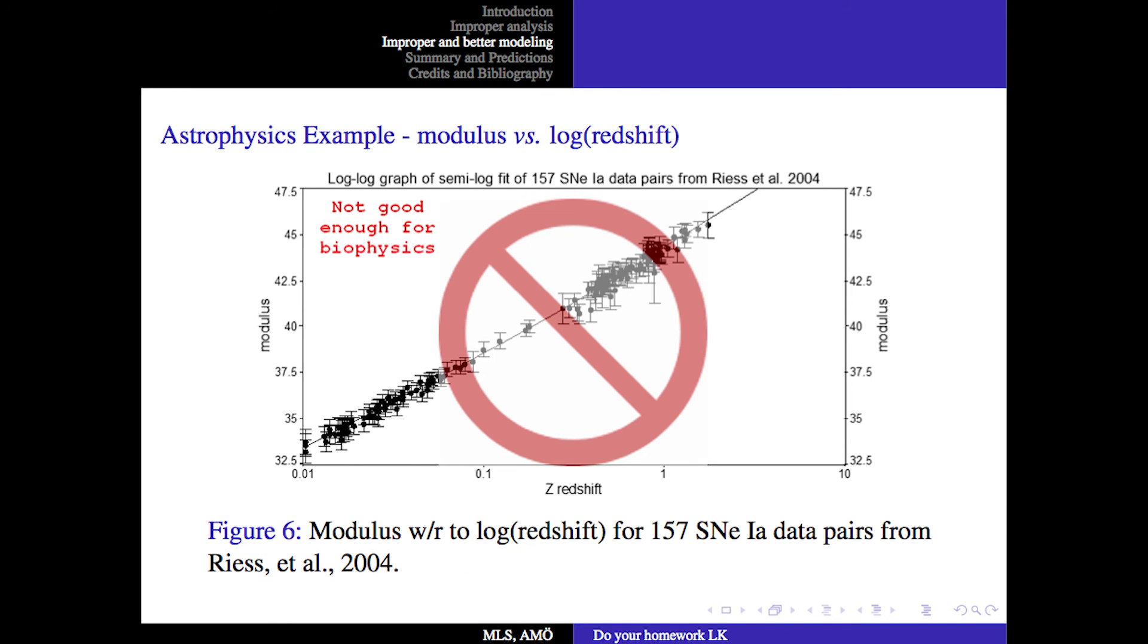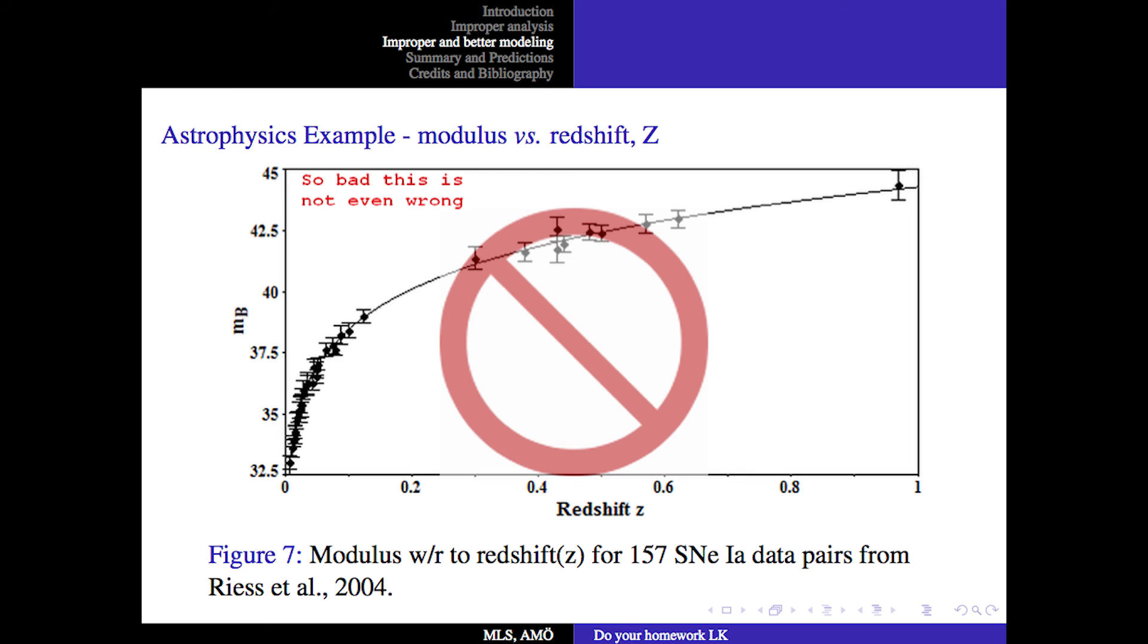This is a log-log graph of the semi-log fit of the 157 gold data pairs from Riess et al. Not good enough for biophysics. Here is another sample. This is called a semi-log plot. This is commonly used by astrophysicists. This is so bad, this is not even wrong.